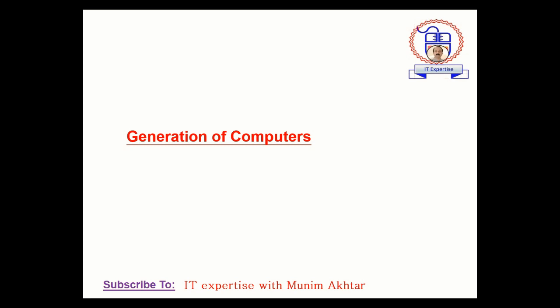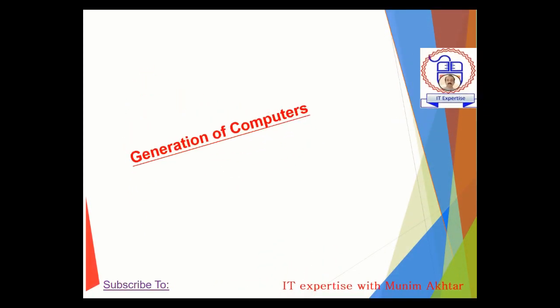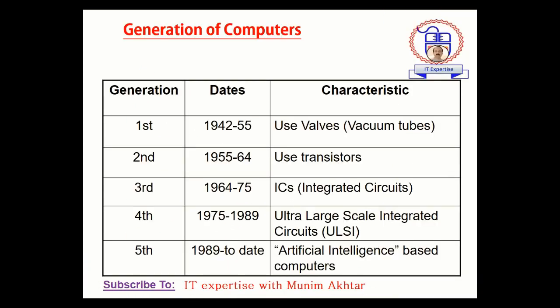Now let's look at the next generations of computers. We have five generations — let's discuss them one by one. The first generation is from 1942 to 1955. The characteristic of this generation is that it used vacuum tubes for solving problems.